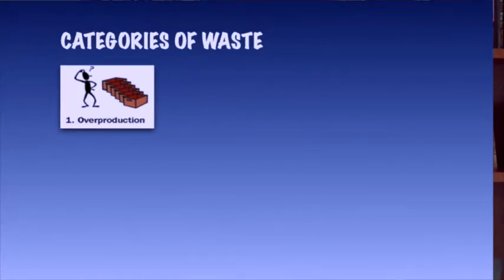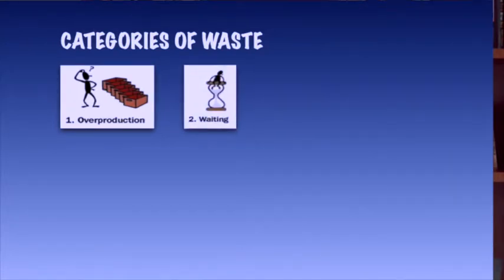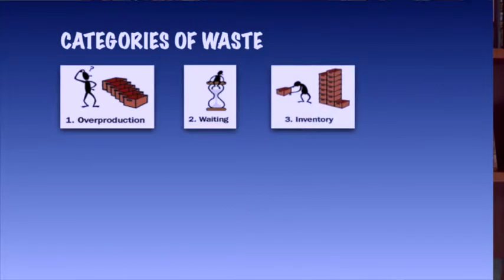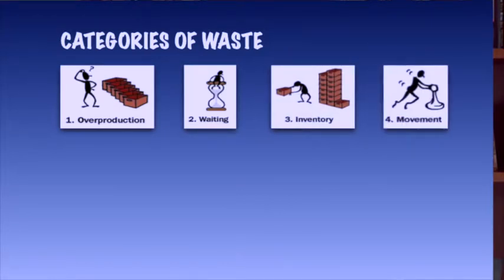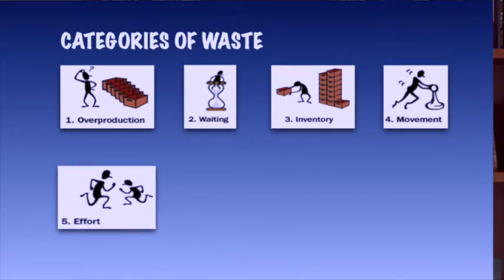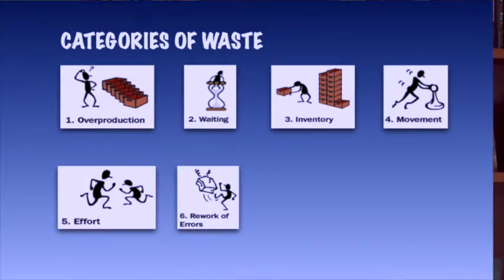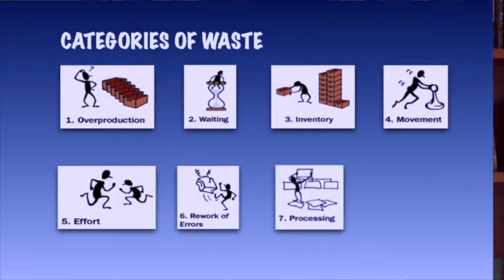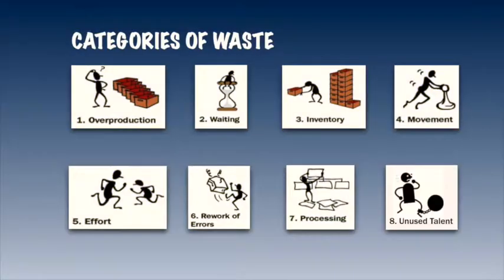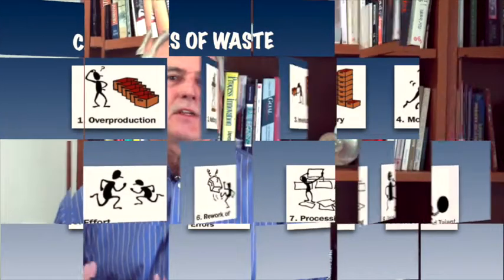Now, let's take these definitions of waste and consider waste on your project. Go back to the sticky notes that you created in the last session and categorize them. You can create categories with new sticky notes and post them in a line, on the wall, or on a table. Then place the sticky notes with your jobsite wastes under the appropriate category. Stop the playback of this video for a moment to do this exercise. If you are with a group, take five minutes to discuss them and see if you all agree on the categories that each waste fits into. Also, list any more wastes that you didn't see before.